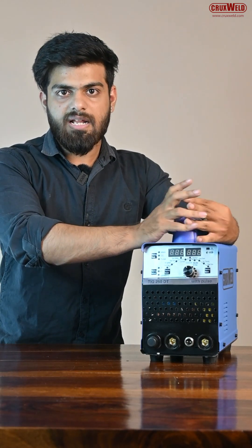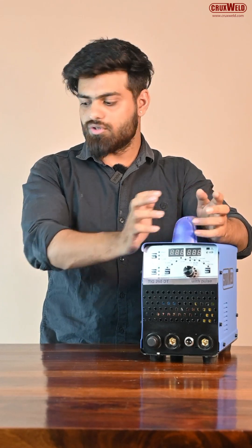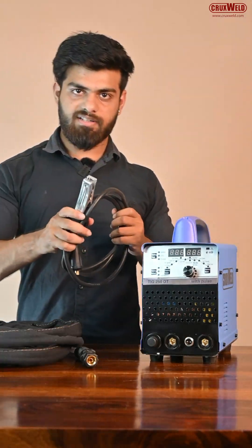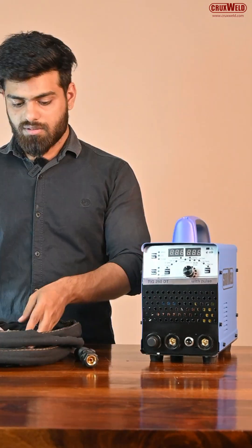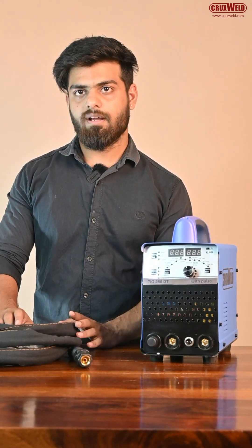Crux Weld TIG200P DC welding machine helps you to work smarter and cleaner. The TIG200P DC welding machine includes TIG welding torch, earthing clamp and some spare parts. All these spare parts come with great build quality and best finishing.